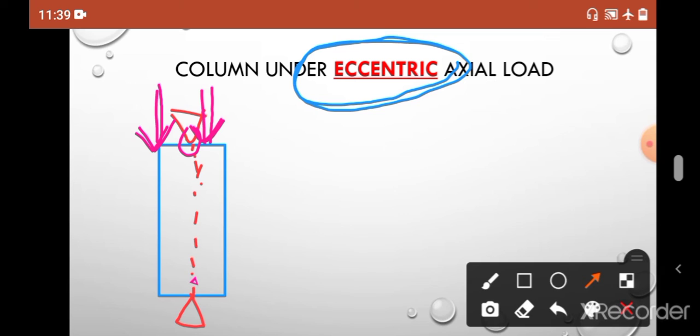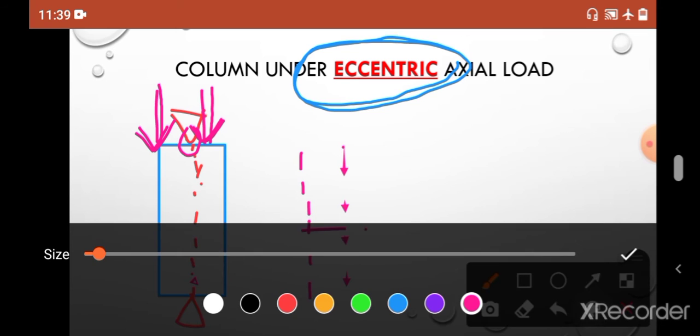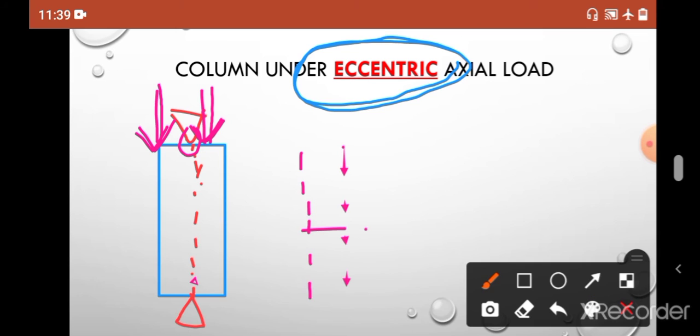So now what will happen? The load will follow the shortest path, so it will transfer from this point to this point through center. But if this is the load line and this is the center line, there is a gap or eccentricity - let's say this is e. And the load is P. So at this center, definitely there is a moment due to this axial load and this lever arm. From standard physics, the moment M is nothing but P times e.